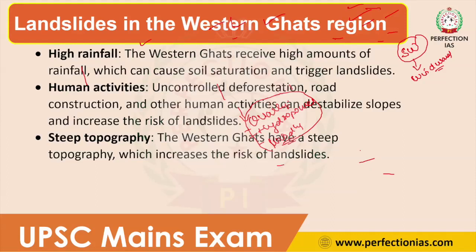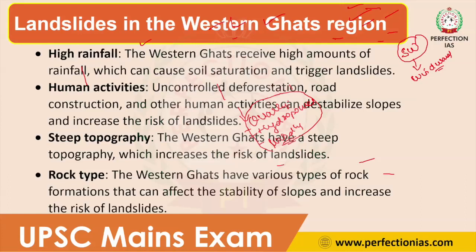The next cause is steep topography — like the Himalayan region, the Western Ghats also have steep topography, which creates conditions for landslides. Then, rock type is another cause. The Western Ghats have various types of rock formations with no homogeneity. When a region is made up of many types of rock with different compositions and mineral compositions, it affects the stability of the slope and increases the risk of landslide.